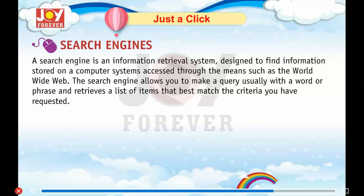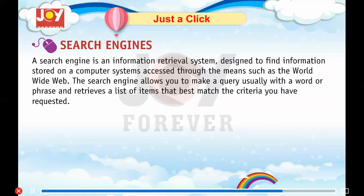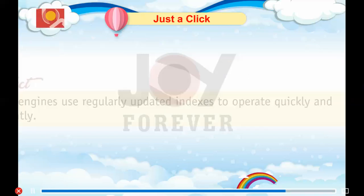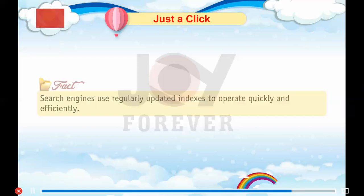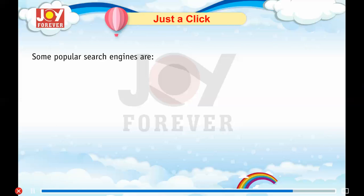Search Engines: A search engine is an information retrieval system designed to find information stored on computer systems, accessed through means such as the World Wide Web. The search engine allows you to make a query, usually with a word or phrase, and retrieves a list of items that best match the criteria you have requested.